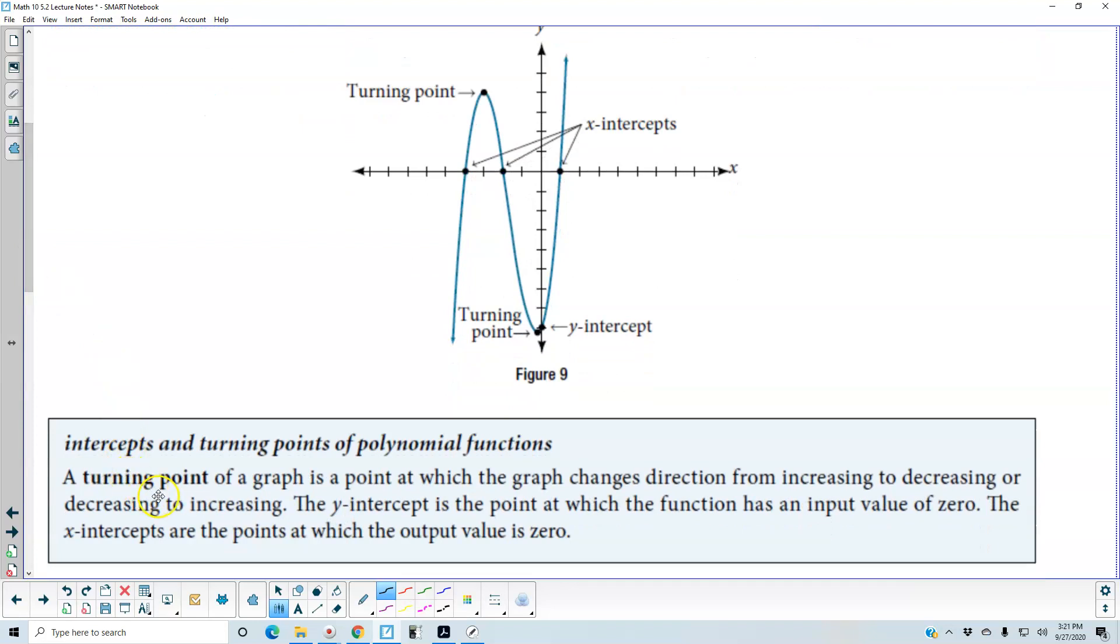A turning point of a graph is a point at which the graph changes direction from increasing to decreasing or decreasing to increasing. In this one here, we are increasing, there is a turning point, now it is decreasing. We come down here, we have another turning point, so it is decreasing and then it is going to increase.